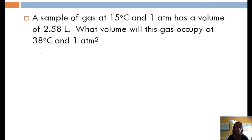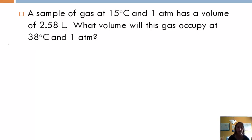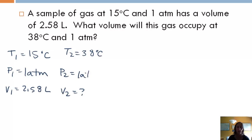So let's look at an example with Charles' law. So we have a sample of gas at 15 degrees Celsius. So T1 is going to equal 15 degrees C. And we've got a P1 of one atmosphere. And it has a volume of 2.58 liters. We want to know V2 if our new temperature is at 38 Celsius and our pressure is constant at one atmosphere.